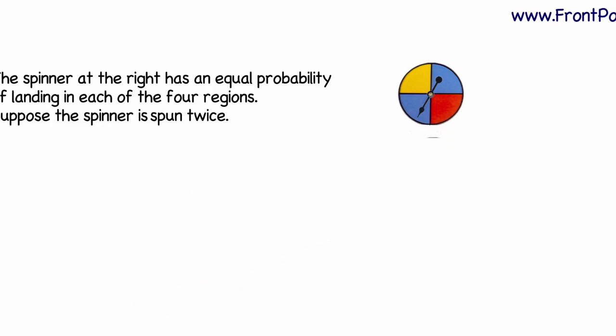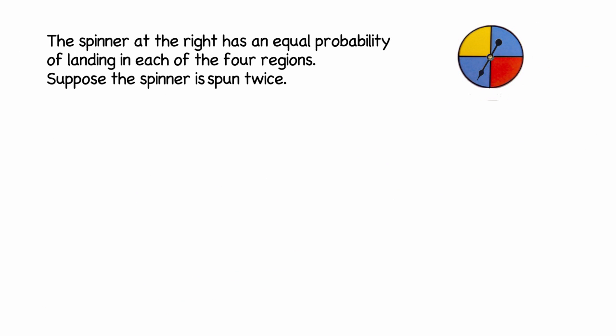This problem says the spinner at the right has an equal probability of landing in each of the four regions. Notice I have a yellow region, two blue regions, and a red region, and you have an equal chance of landing on each of those separate regions. Suppose the spinner is spun twice.